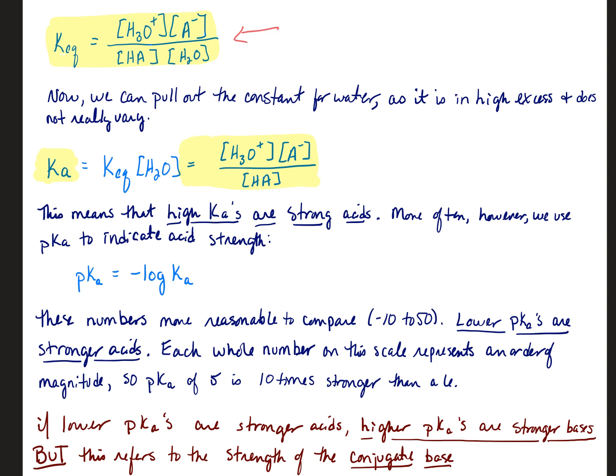Here's the thing. We can pull out the constant for water because it's very, very high in comparison to everything else. So it almost changes a negligible amount. So we call this KA, which is sort of like the same thing as KEQ of water. And KA is defined, therefore, as the concentration of H3O+ times the concentration of A- all over the concentration of HA, so of your original acid.